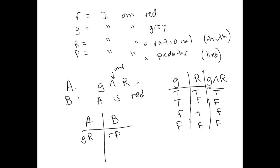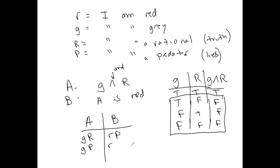Now suppose A is lying. If A is lying, that means either he wasn't gray, he wasn't rational, or both. Let's suppose he was still gray — that would mean he's a predator, since only predators lie. If he were a gray predator, that would make B a red something. Since B is claiming A is red, but in this case we assumed A is gray, that would make B a liar — a predator.